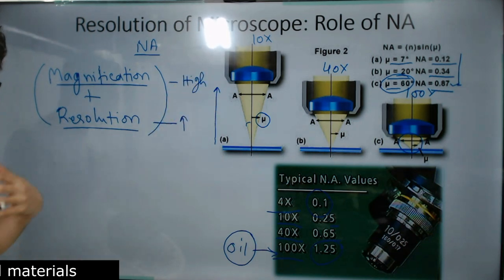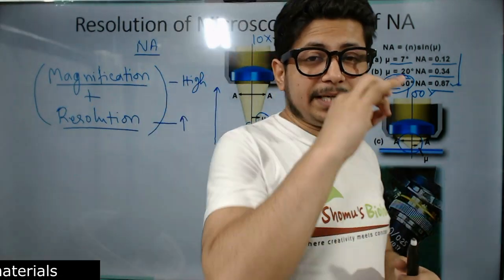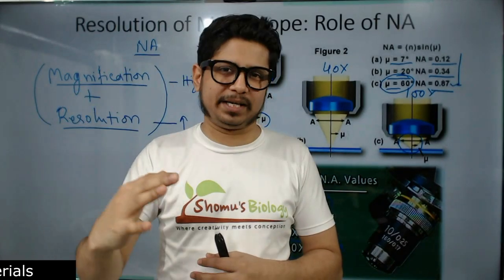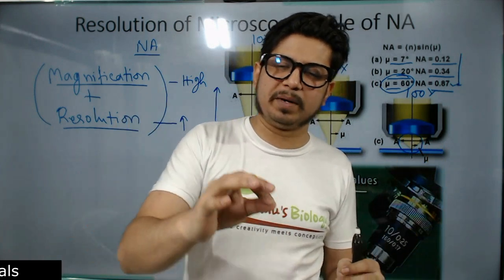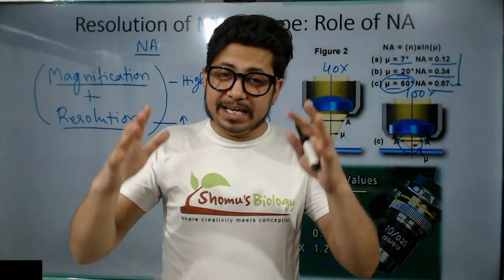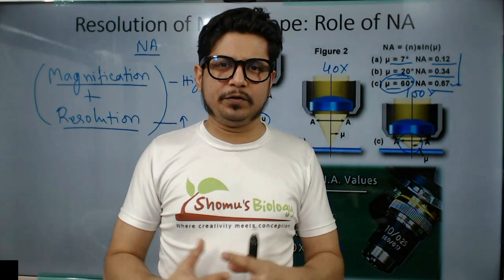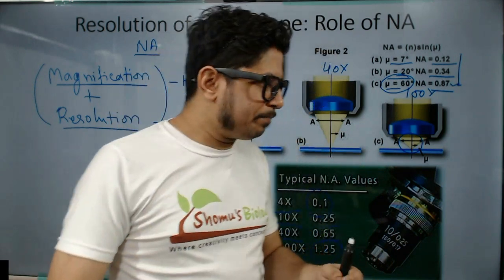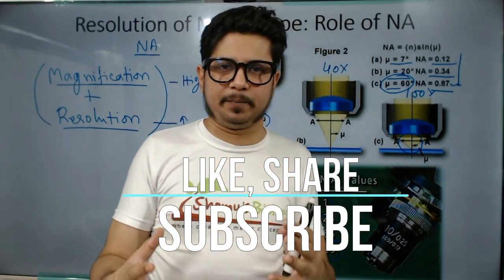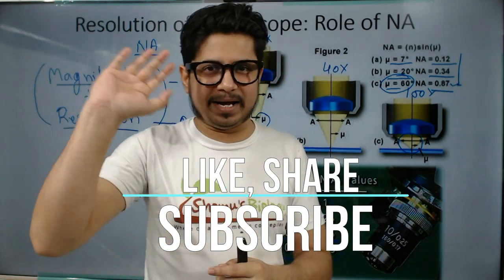A microscope is not all about magnification — magnification is important, but resolution is equally important. A microscope is considered superior if it has higher magnification with better resolution. That is the basic understanding of microscope resolution and magnification. If you like this video, please hit the like button, share it with your friends, and subscribe to this channel for more videos. Watch all the lectures in this series as they will help you handle a microscope both theoretically and practically.